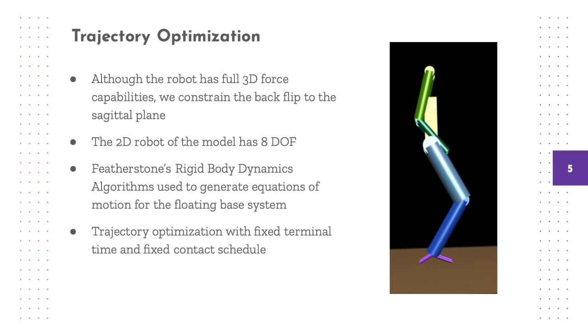To generate nominal acrobatic trajectories for the robot, we perform a trajectory optimization on a simplified 2D model of the robot. Using Roy Featherstone's rigid body dynamics algorithms, we generate the equations of motion for the floating-based system and enforce them as a constraint at each time step in the optimization.